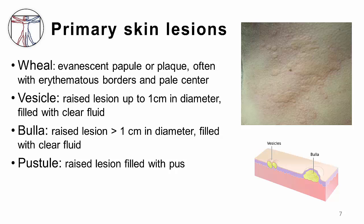In contrast to a wheal, a vesicle is a circumscribed fluid-containing epidermal lesion that is usually not transient. They may occur in association with an allergic response, autoimmune condition, or viral infection. When these fluid-filled lesions grow to greater than a centimeter in diameter, they are known as bulla. Sometimes, instead of clear serous fluid, these lesions contain white-yellow pus — in this case, the lesions are called pustules.